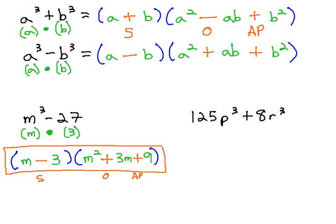125p cubed plus 8r cubed. The cubes get me thinking about the cubes formula. The cube root of 125p cubed is 5p, because 5 to the 3rd is 125. The cube root of 8r cubed is 2r, because 2 to the 3rd is 8.